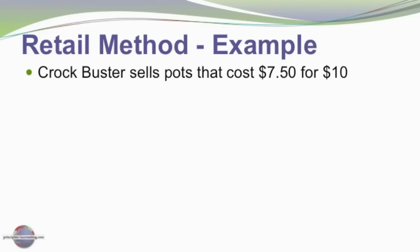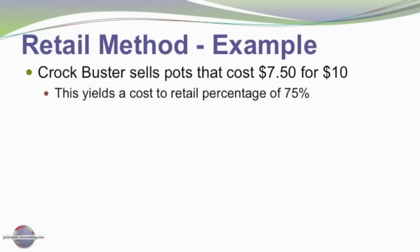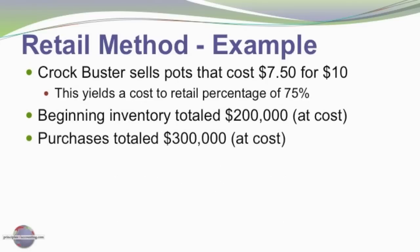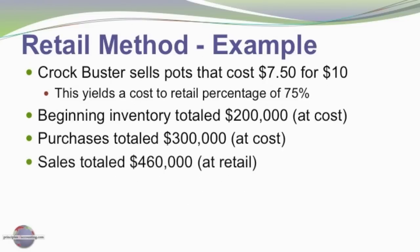Crockbuster sells pots that cost seven dollars and fifty cents; they're able to resell them for ten dollars. This yields a cost-to-retail percentage of seventy-five percent — this is not the profit margin, but the cost-to-retail percentage: seven-fifty divided by ten dollars. Beginning inventory had a cost of two hundred thousand, purchases of three hundred thousand were made during the period, and sales for the period totaled four hundred and sixty thousand.